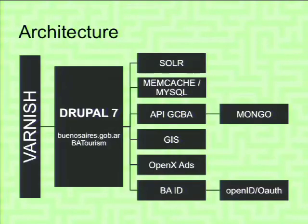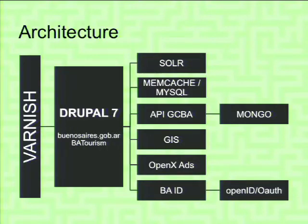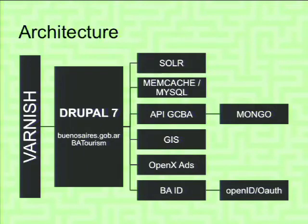We came up with this core architecture for Buenos Aires City. We are using Varnish and Drupal 7 for our main website buenosairescity.gov.ar. Our new tourism website runs in the same single installation but with a different orientation — multi-language and responsive. We also use our own Solr-Lucene search system running separately. We're using Memcache and MySQL, building our own API, our own citizen login, our own maps via GIS, and using OpenX to administer all banners across the website.